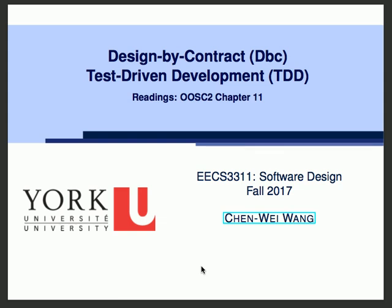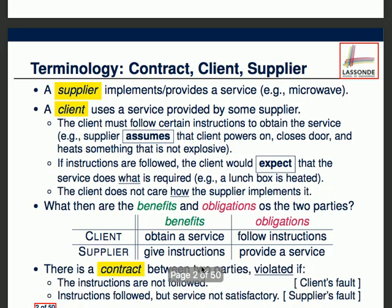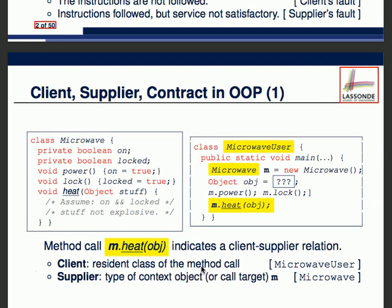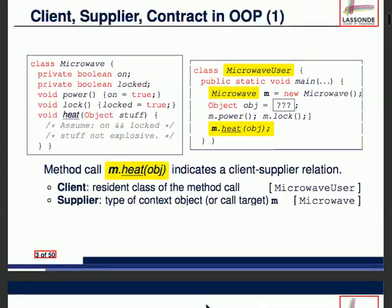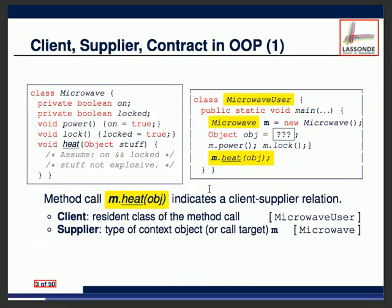Last time I talked about client-supplier: the benefits and obligations of each side. Please make sure you understand the big picture of Design by Contract in the context of object-oriented programming. Whenever you make a method call, you have a client-supplier relationship. For example, with a microwave user and a microwave: the user is the client, the microwave is the supplier. The client always has an obligation to meet certain criteria before using the service — that's the precondition.